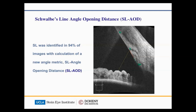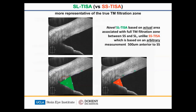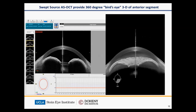In our study, 94% of patients could clearly have Schwalbe's line identified to look at those angle metrics. We now have a Schwalbe's line-based TISA instead of a scleral spur-based TISA. This is a better measurement of the actual filtration zone rather than just assuming a certain measurement anterior to scleral spur — you're actually looking at where the TM starts at Schwalbe's line and measuring posterior to scleral spur.